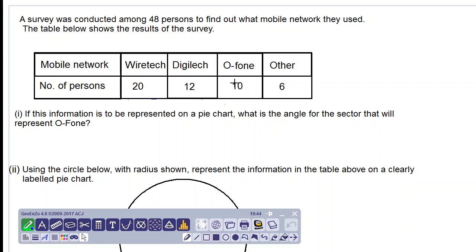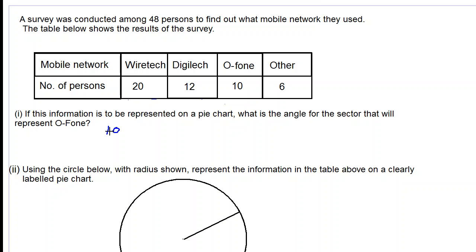So what we do is we take 10 persons for O-fone out of the sum of these numbers: 20 plus 12 plus 10 plus 6. That's 10 over this, which will give 10 over 48. This is the fraction that represents O-fone, and we multiply this by 360 degrees because a circle has 360 degrees.